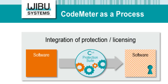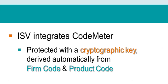In your role as ISV, you are first going to integrate CodeMeter into your software. An easy option is to use CodeMeter Protection Suite and encrypt the entire application. Additionally, you can use CodeMeter Core API to integrate license checks into your software. For the encryption process, you need a cryptographic key. This key is automatically derived from Firm Code and Product Code.